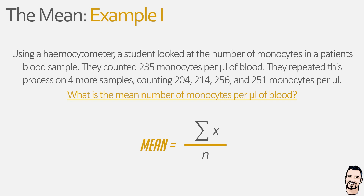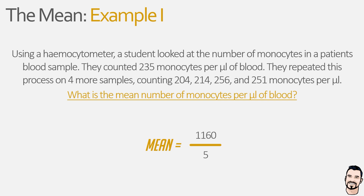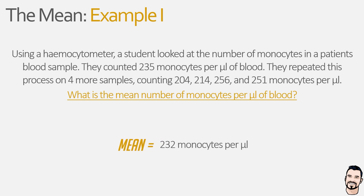In order to do this we need to transfer all of the information from the example into our equation. The sum of x becomes our five data values added together, and n becomes five as this is the number of data values the student observed. We can simplify this by completing the top line of the equation, adding our values together to give us 1160, which is then divided by the number of observations — five — to give us a mean value of 232 monocytes per microlitre. So 232 is the average of our five data values.